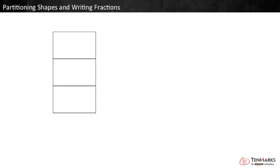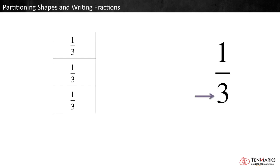When a shape is broken into equal pieces, we can write a fraction to describe the area of each piece. This shape is broken into three equal pieces, so each piece is equal to one third of the whole. In a fraction, the denominator, or bottom number, tells the number of pieces the whole is broken into. The denominator for this model is three because there are three equal parts.